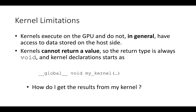When I introduced kernels as a special function to be run on the GPU, I omitted two important aspects. The first point is that kernels execute on the GPU and do not, in general, have access to data stored on the host side. The second important point is that kernels cannot return a value, so the return type is always void. How do you get results from your kernel? You will need to use cudaMemcpy to move data from the GPU to the CPU.